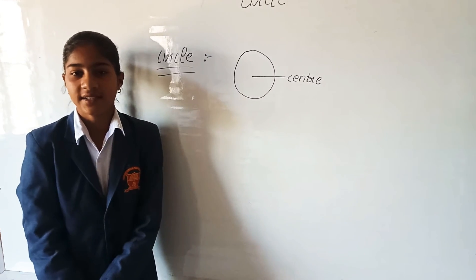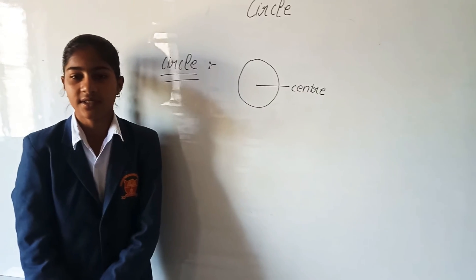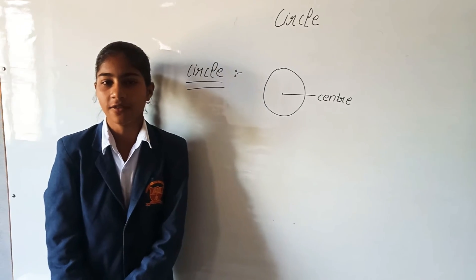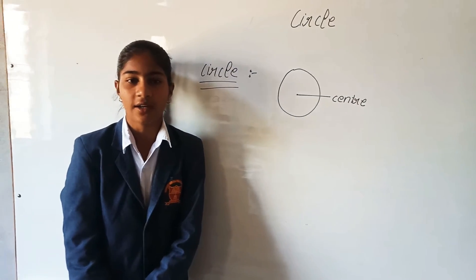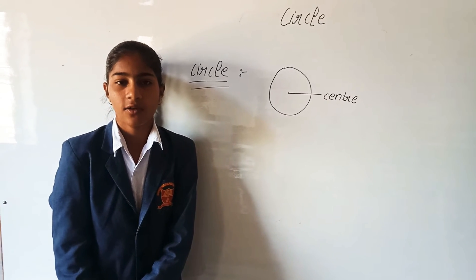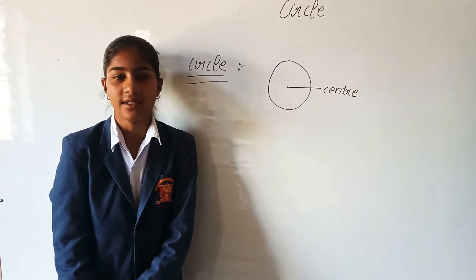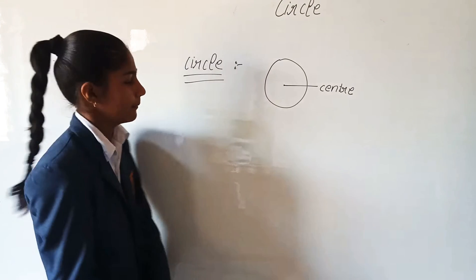What is a radius? A radius is the fixed distance from the center of the circle to the arc of the circle. It is constant all over the circle and there are infinitely many radii in a circle.